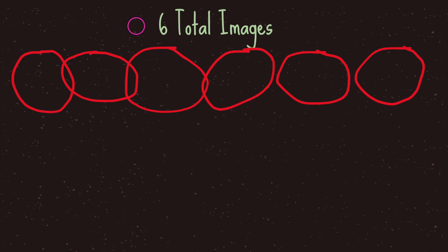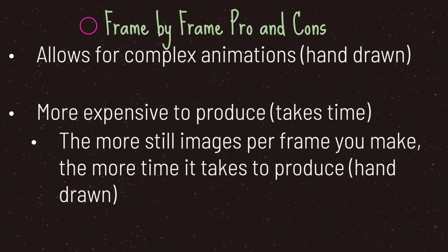There is software that helps you make animation frame by frame, and it requires you to draw and customize each frame to give the illusion of movement. There are pros and cons to frame by frame animation. The pro is that it allows for complex animations because you are creating and customizing the way each frame looks. The negative is that it is more expensive to produce because it takes time, unlike tween animation where you let software do the animation for you.